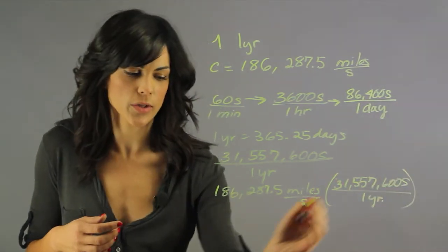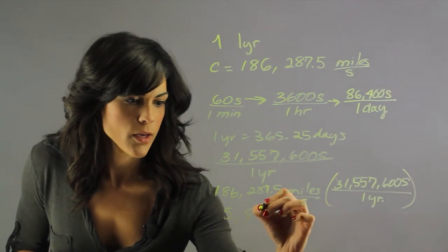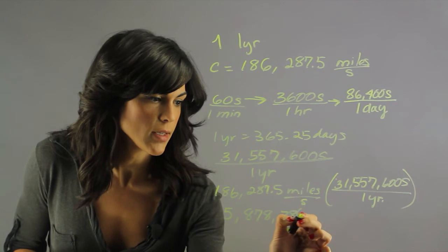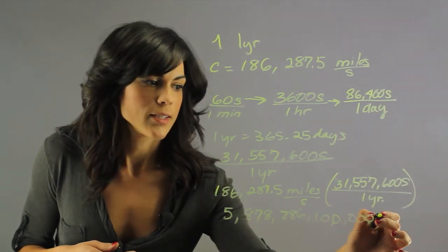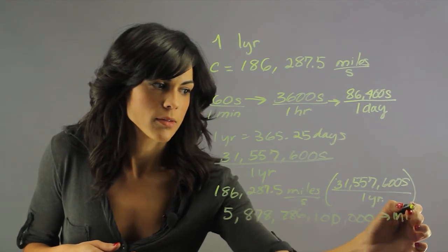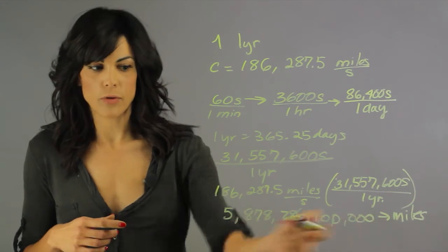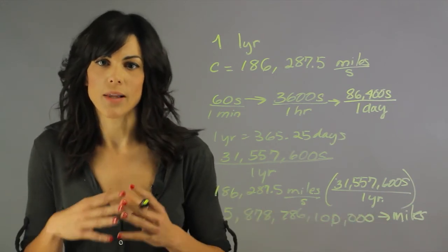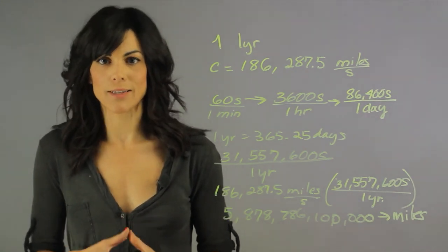If you plug this into your calculator, you have 5,878,786. This is a very large number. And this is the number of miles that light travels in one year, which is, if you look at this in a more sensible way, 6 trillion miles. So light travels about 6 trillion miles in one year. And that's what one light year is.